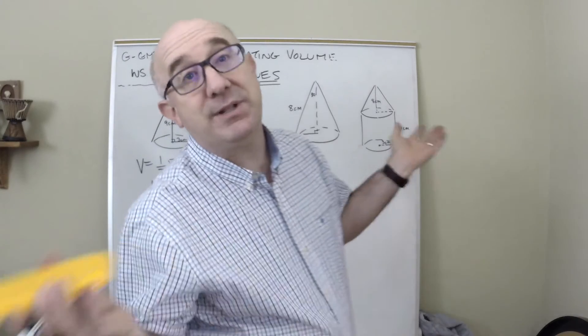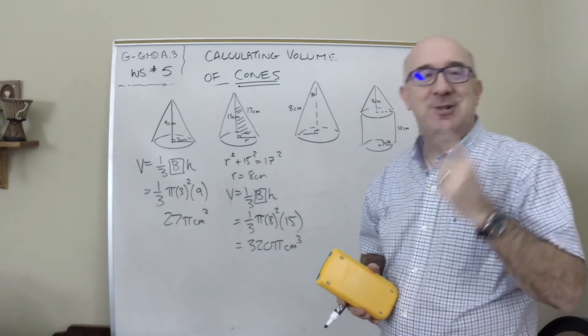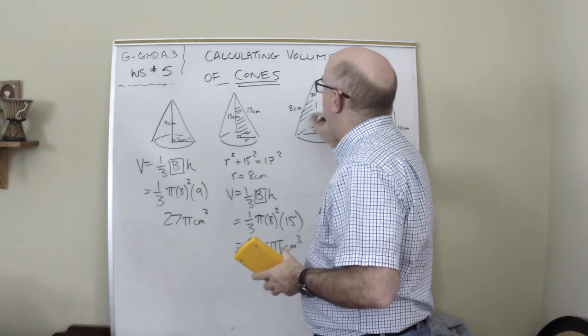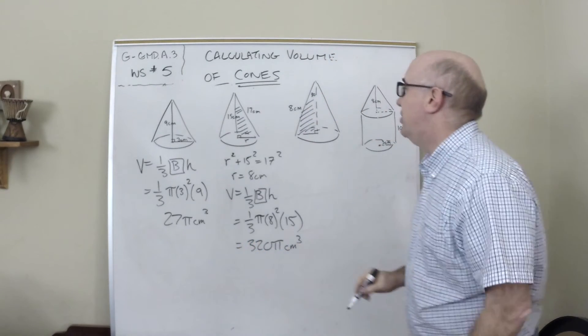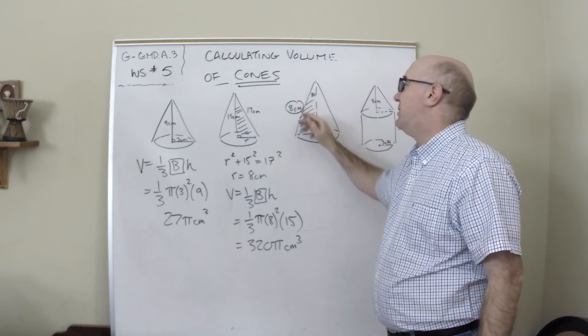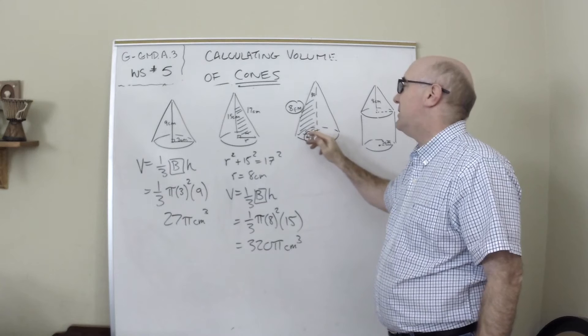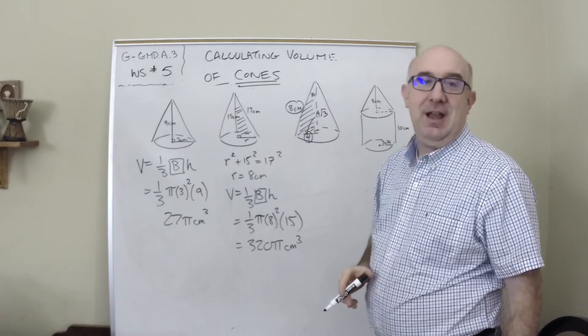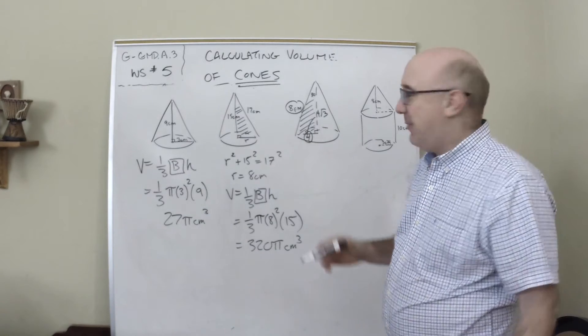Now the next one also has some missing information - what's my radius and what's my height? But there's a 30-60-90 triangle here, a nice little reminder of that relationship. This is the hypotenuse of a 30-60-90, so half of that would be our radius, and then we multiply by root 3 to get the height there.